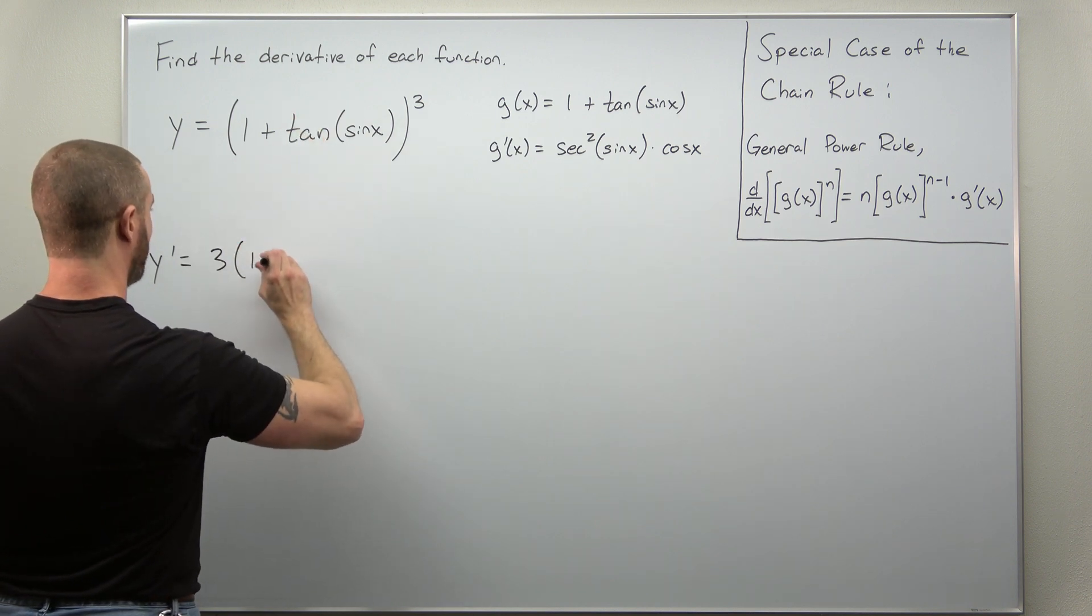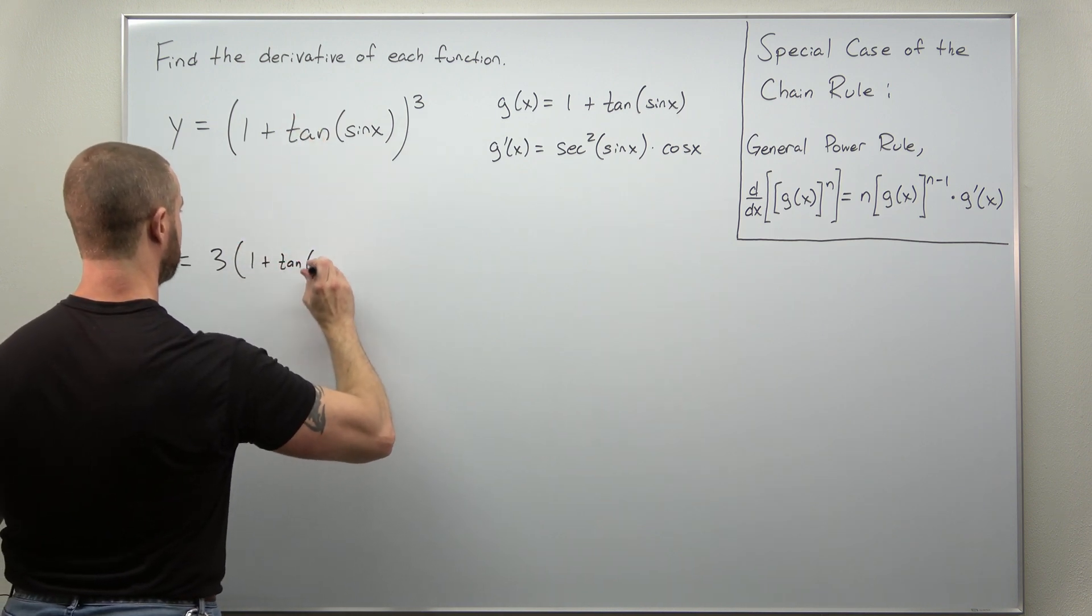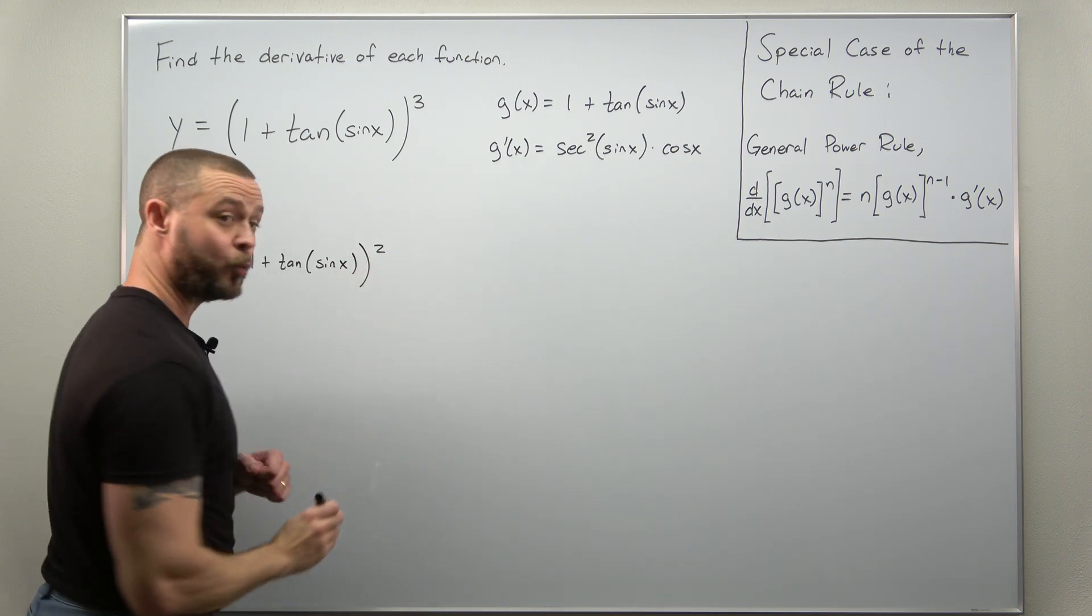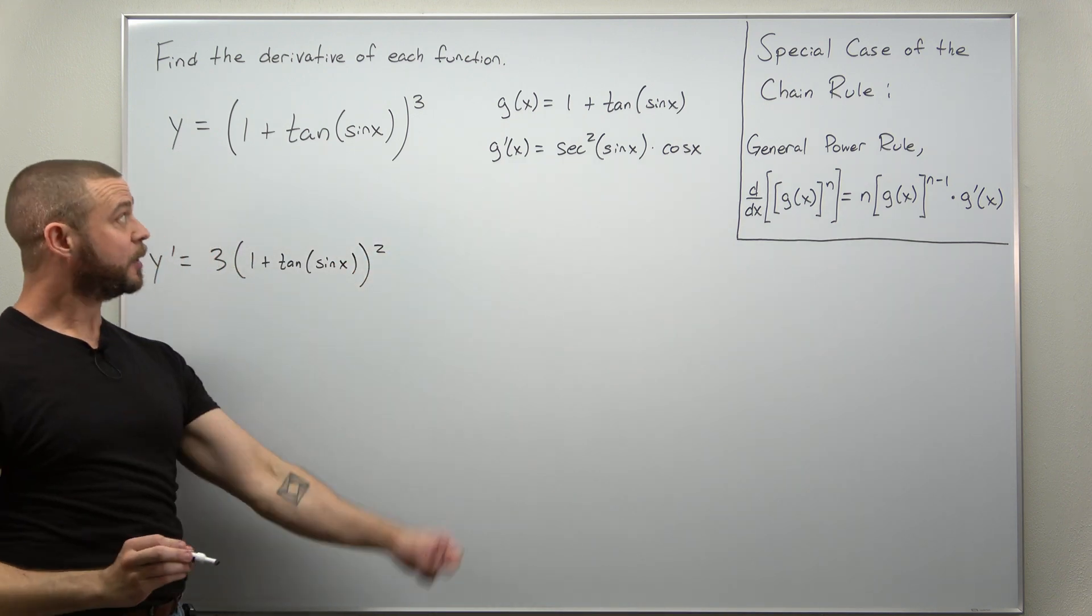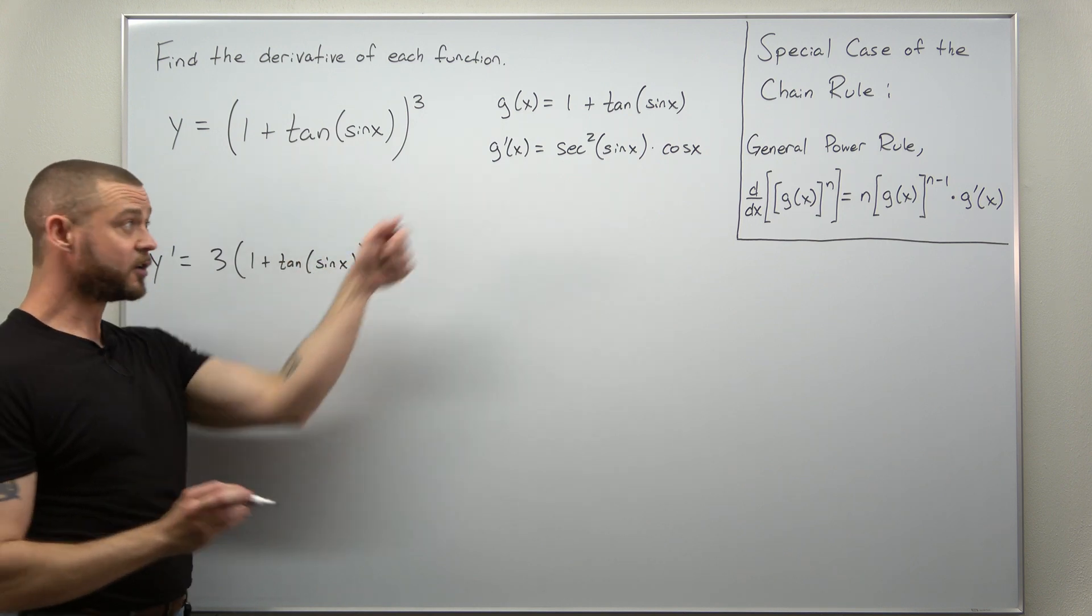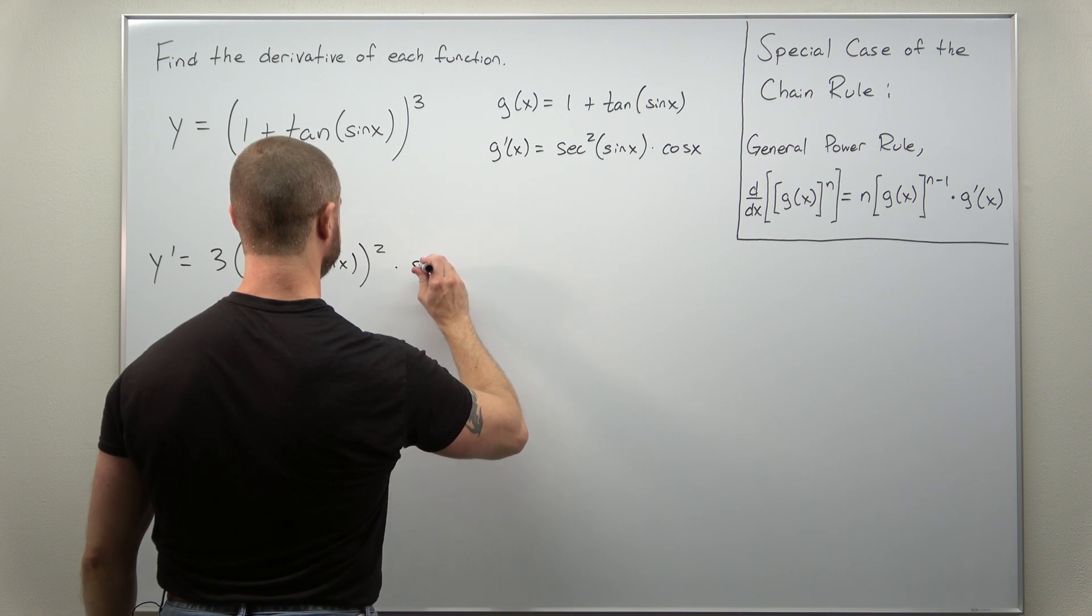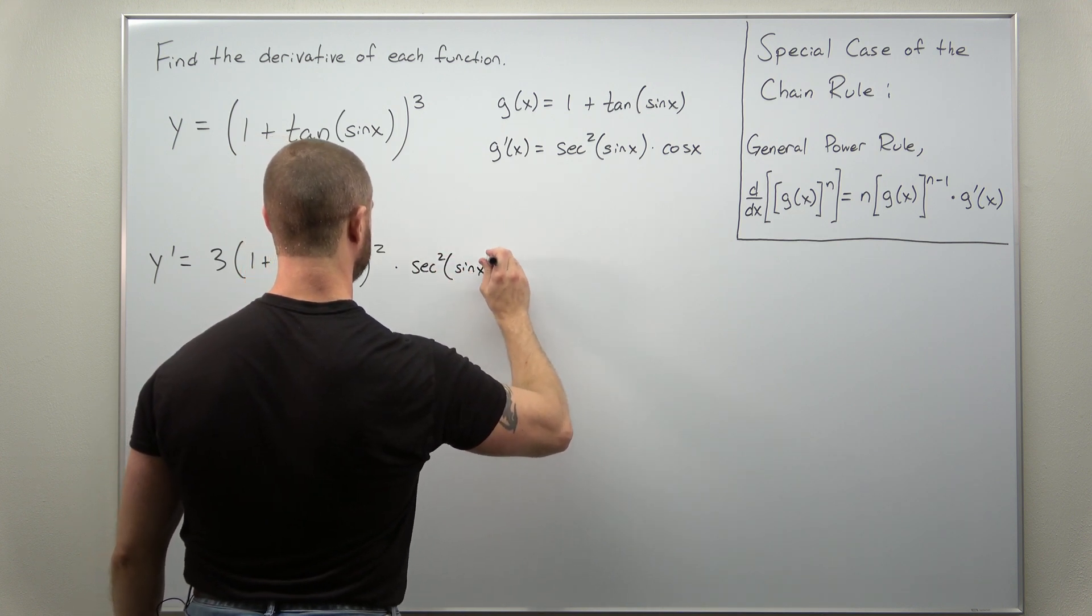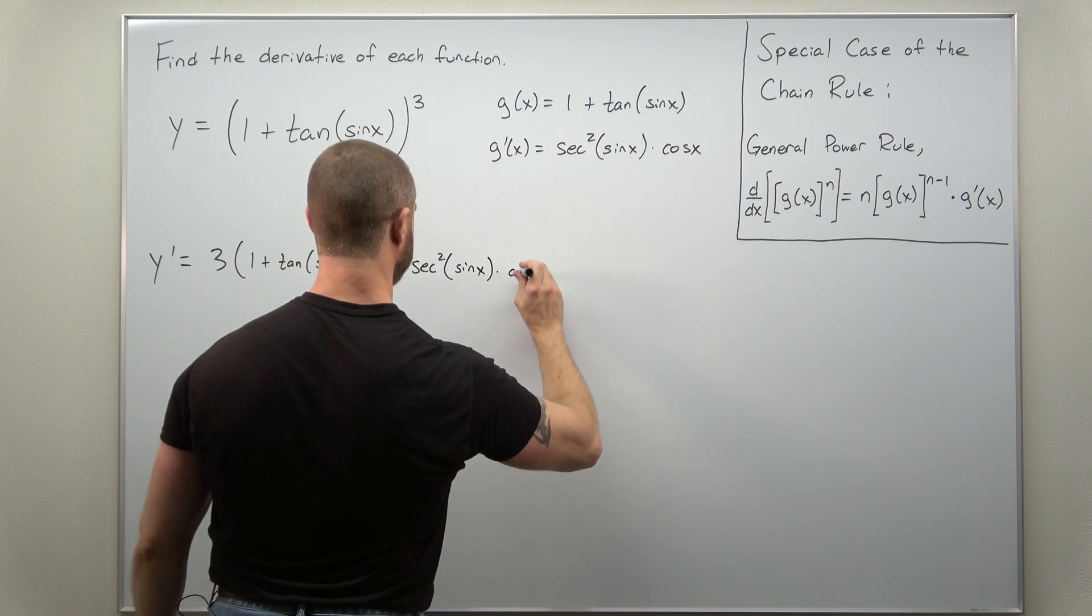We keep the inside the same, 1 plus tangent of sine of x, subtract 1 from that power, and now we multiply by the derivative of the inner function here which we just calculated. We multiply by secant squared of sine of x times cosine of x.